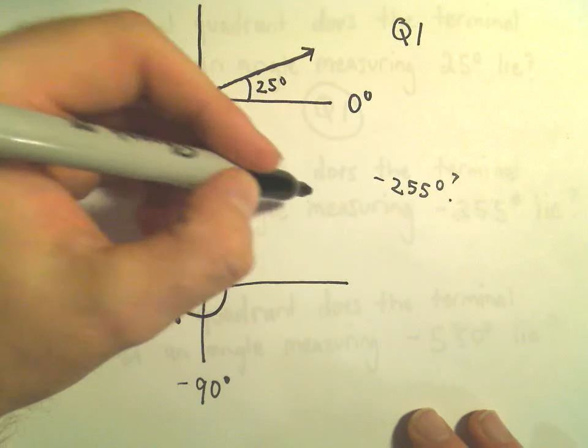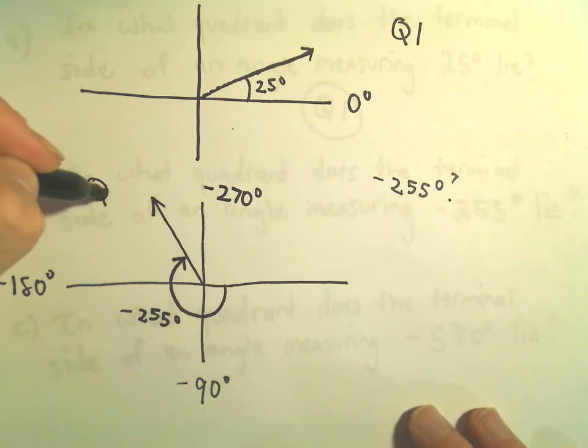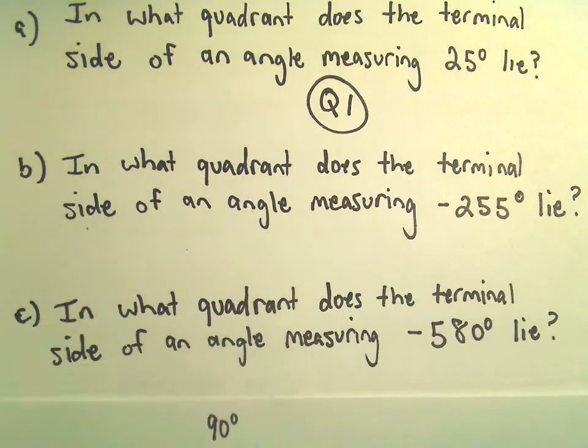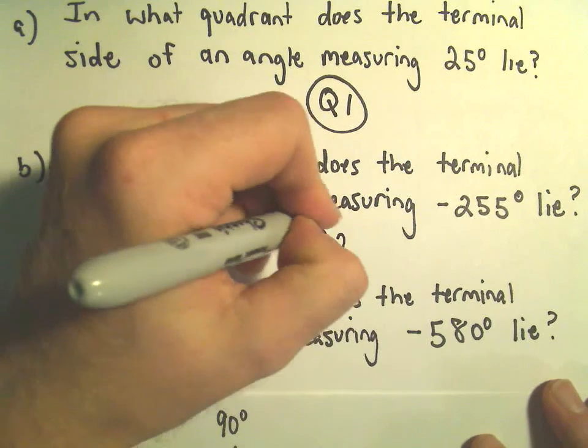This will be quadrant 2, where the terminal edge belongs. So I would simply say quadrant 2 in this case.